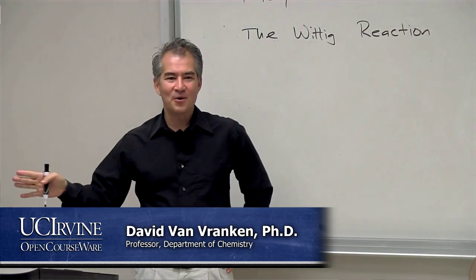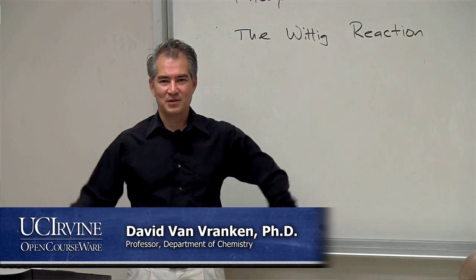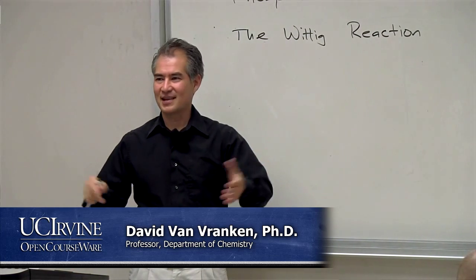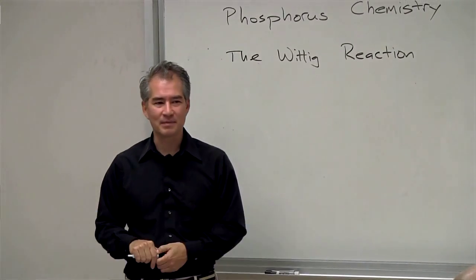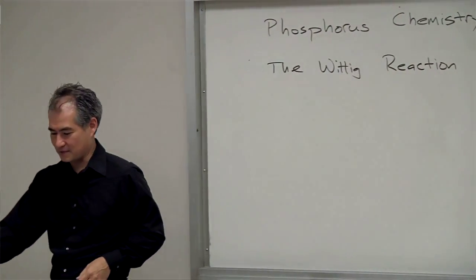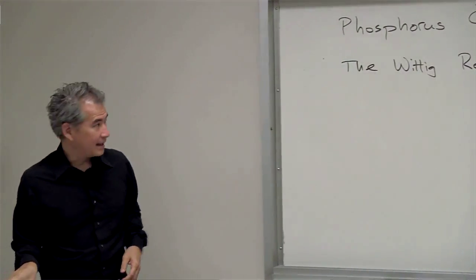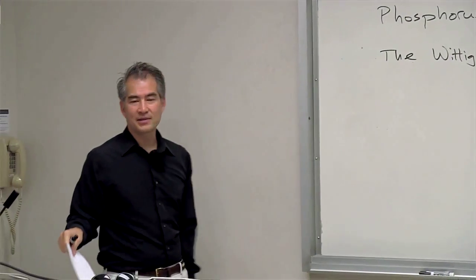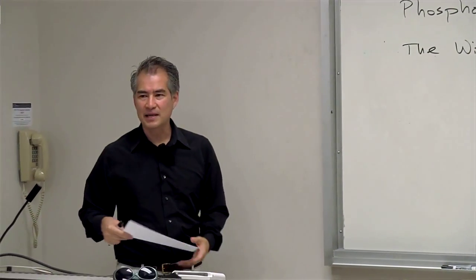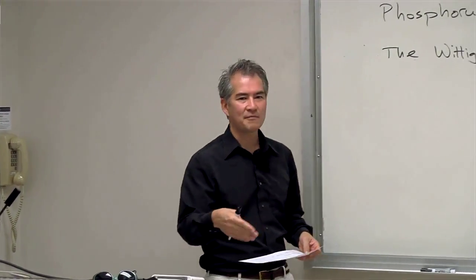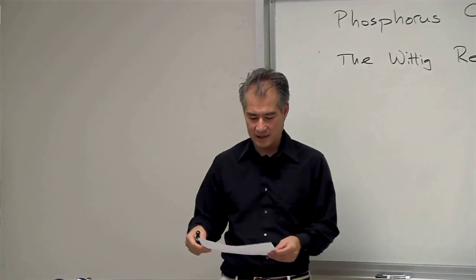Last week we almost finished up phosphorus chemistry, and there's one last little slice of phosphorus chemistry that we have to cover. It's really one of the most important reactions as far as carbon-carbon bond forming reactions for phosphorus. And that's the Wittig reaction. I think everybody learns about this at some sort of undergraduate sophomore organic chemistry level.